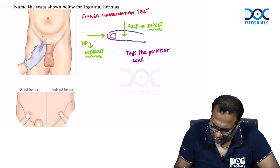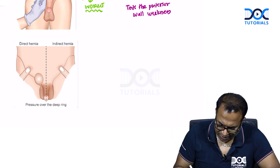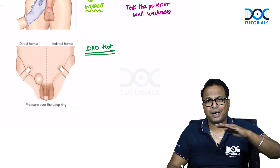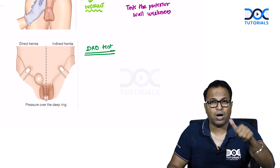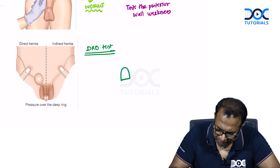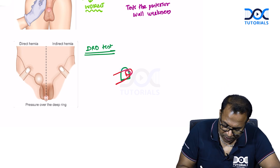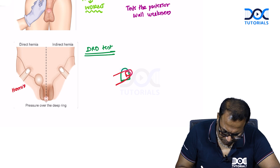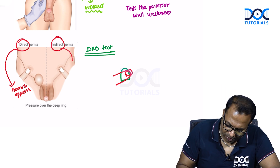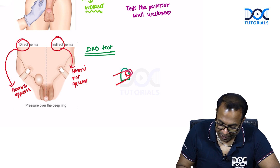The next important test is the deep ring occlusion test (DRO). Make the patient lie down, reduce the hernia, identify the deep ring half an inch above the mid-inguinal point, and compress it with your thumb. Ask the patient to cough. In direct hernia, the hernia appears; in indirect hernia, the hernia does not appear.